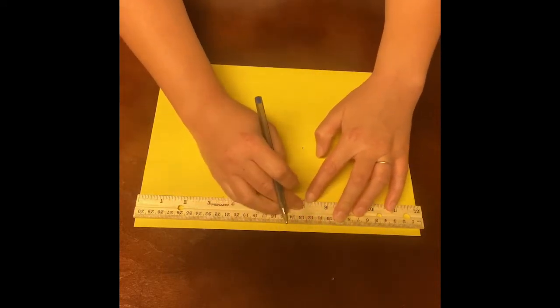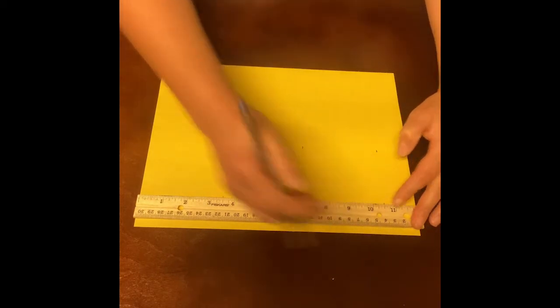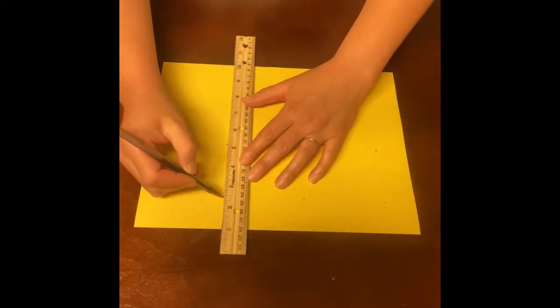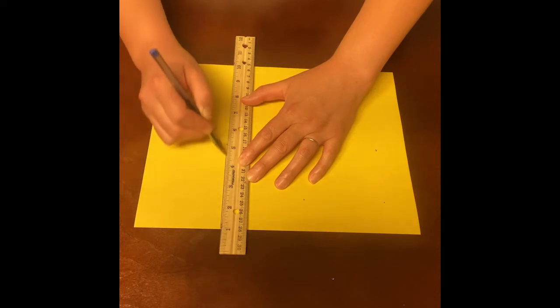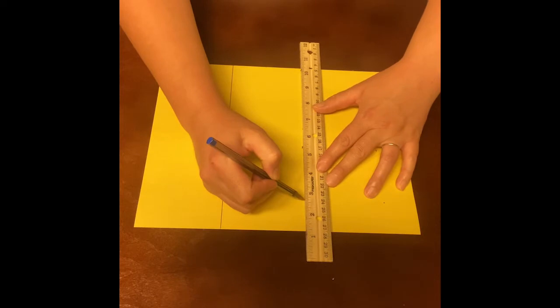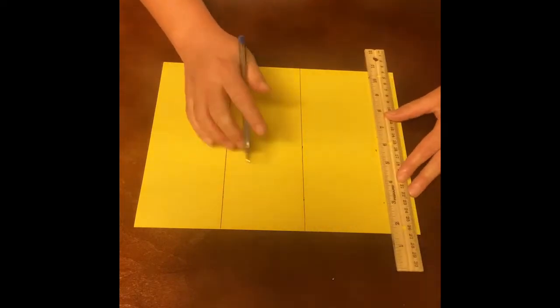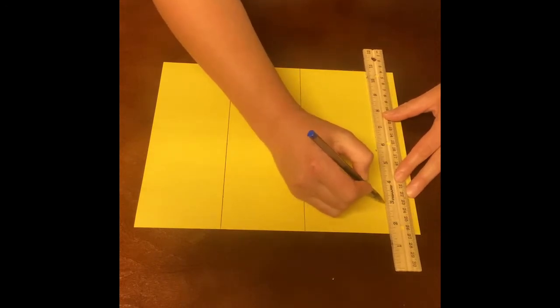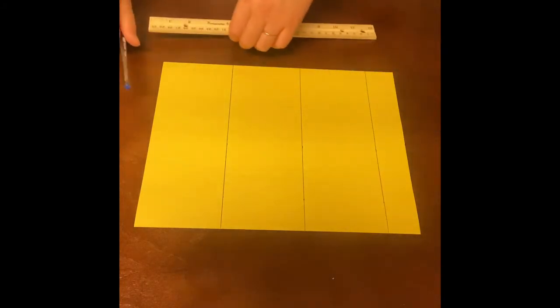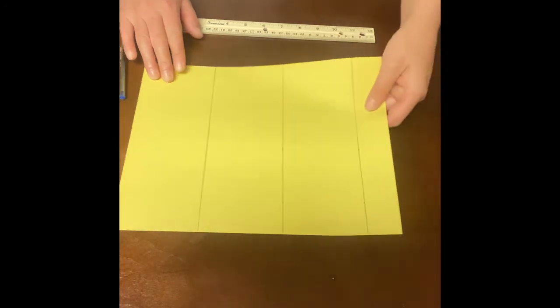So I'm just going to go across just like this. Alright, now let's line up our marks with our ruler and make the line straight across. We're going to do this with all the marks that we created. And what I like to do is cut off this excess right here so I do not get confused.